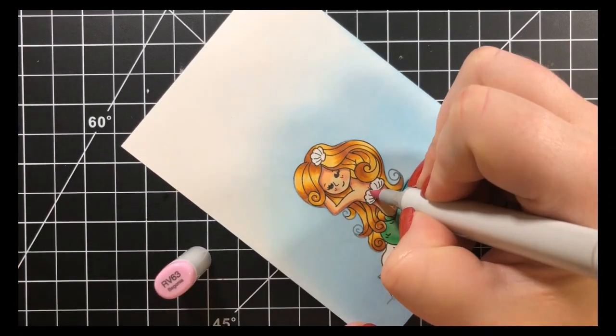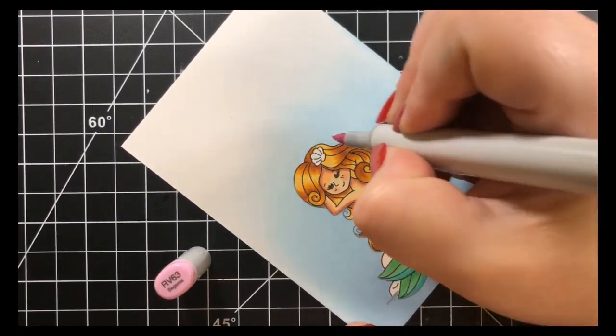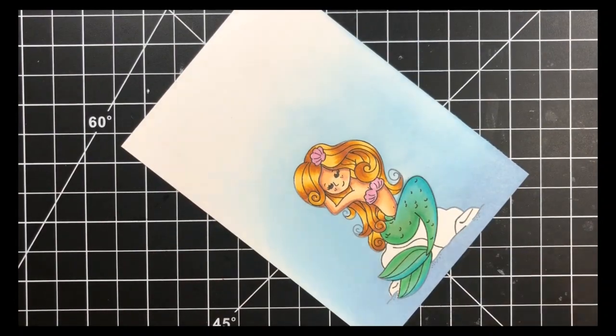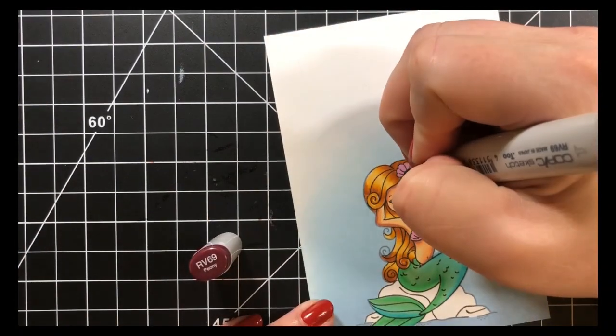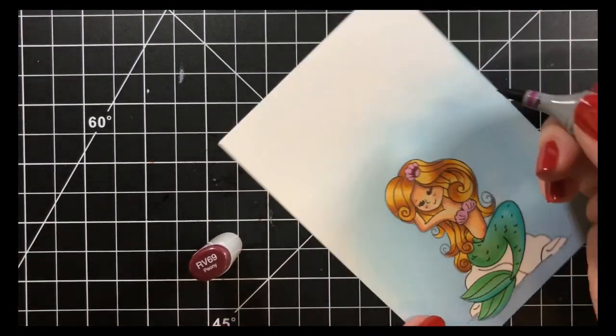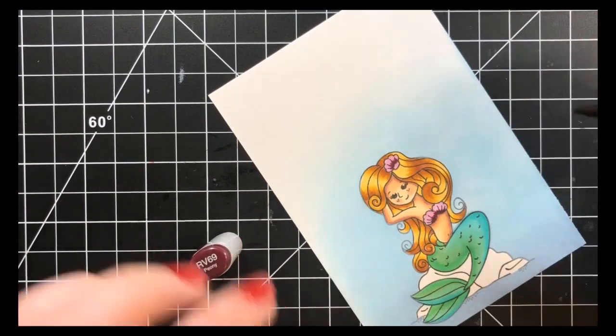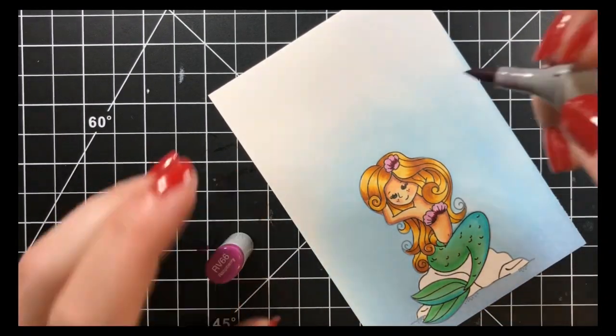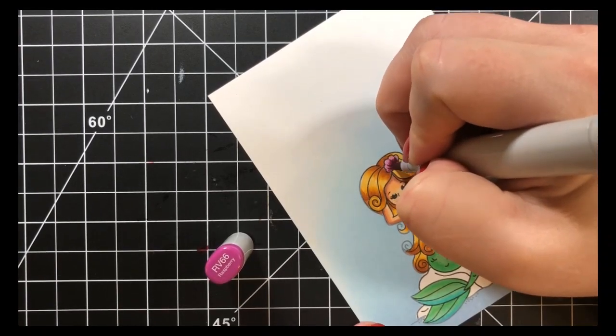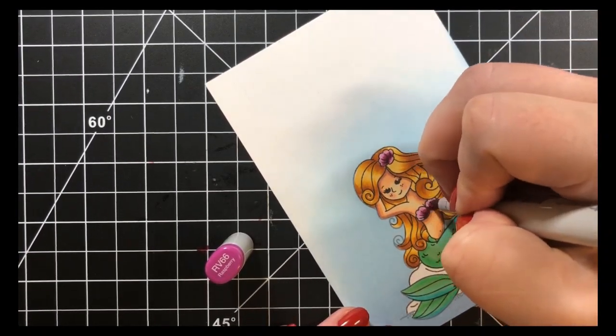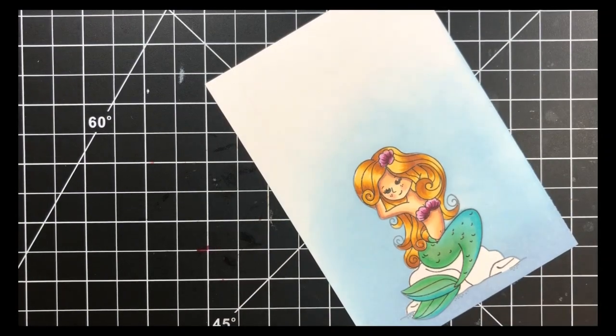Next, for her little seashell in her hair and her little seashell bathing suit there, I'm using my RV markers just concentrating my darkest color being on the base of the little shells then extending that out with my mid-tone and then back to my lightest color. You could get away with two colors here. This is a pretty small area.